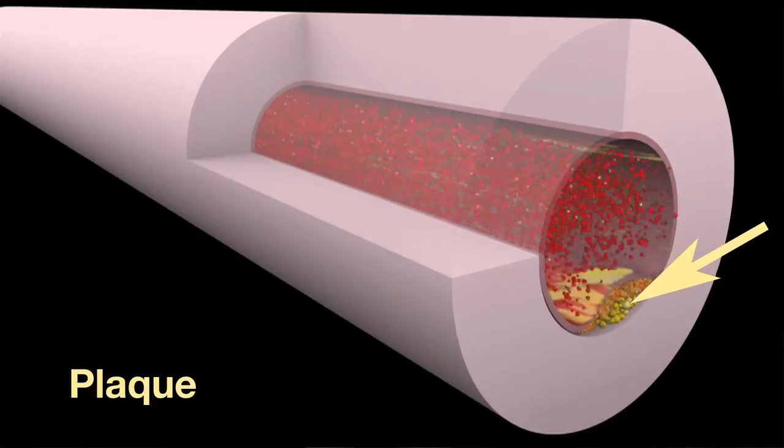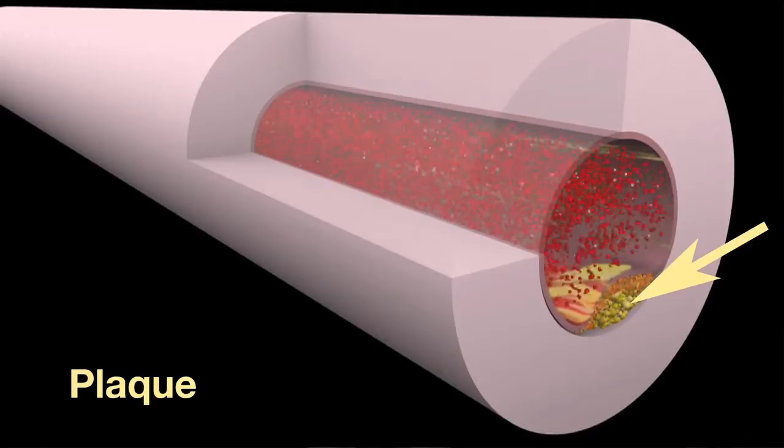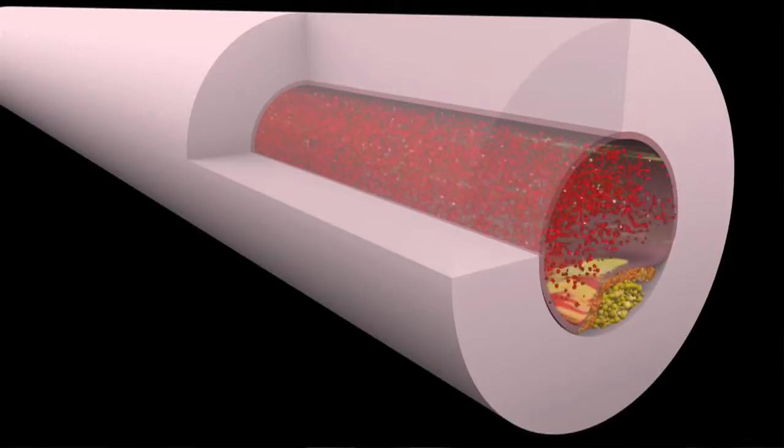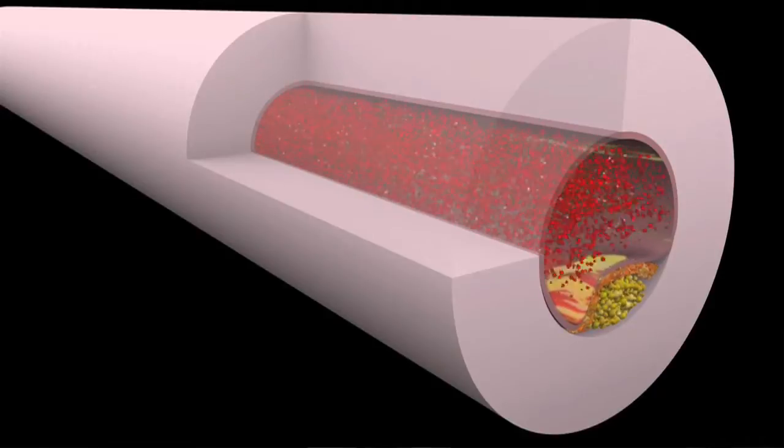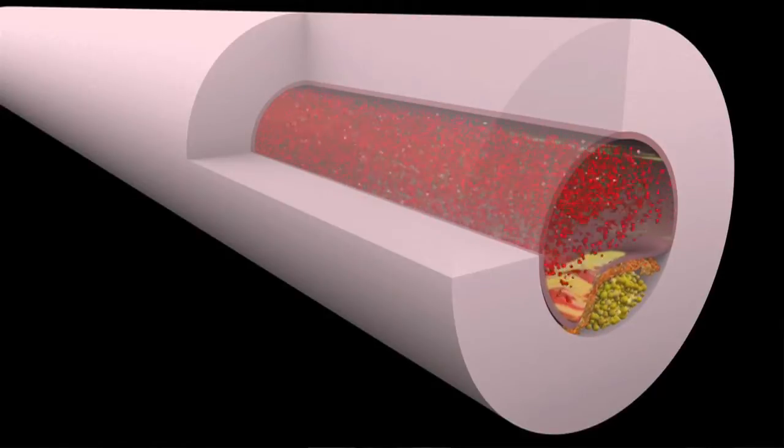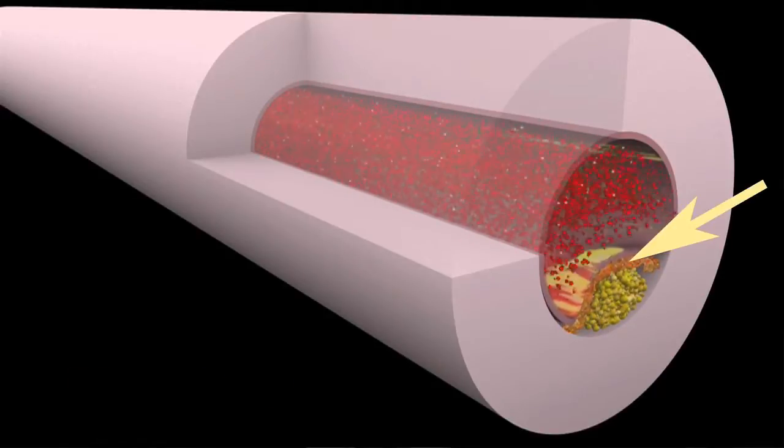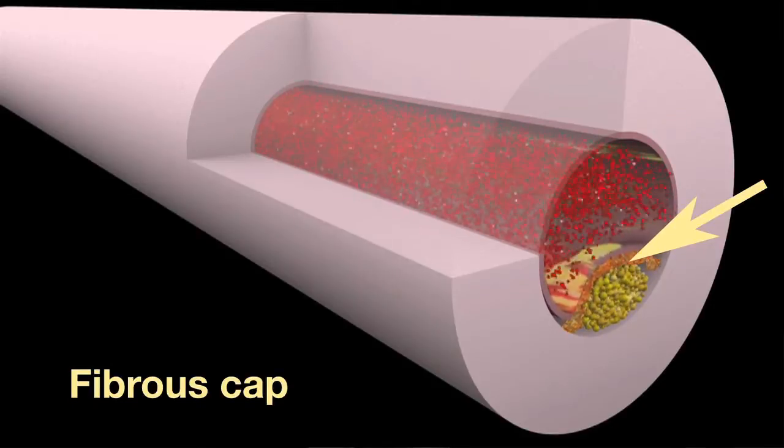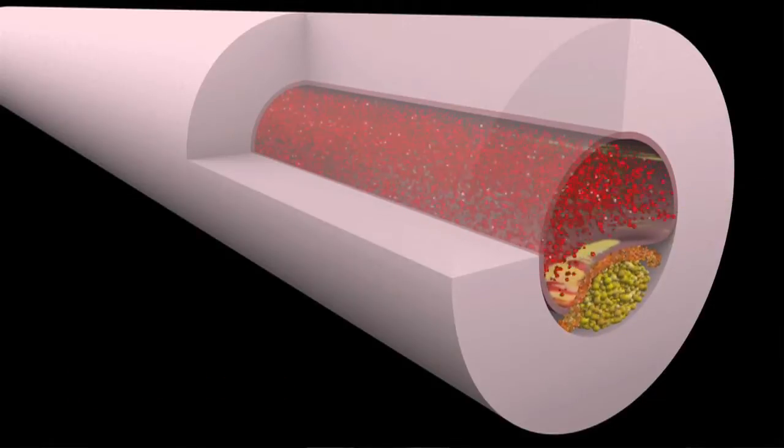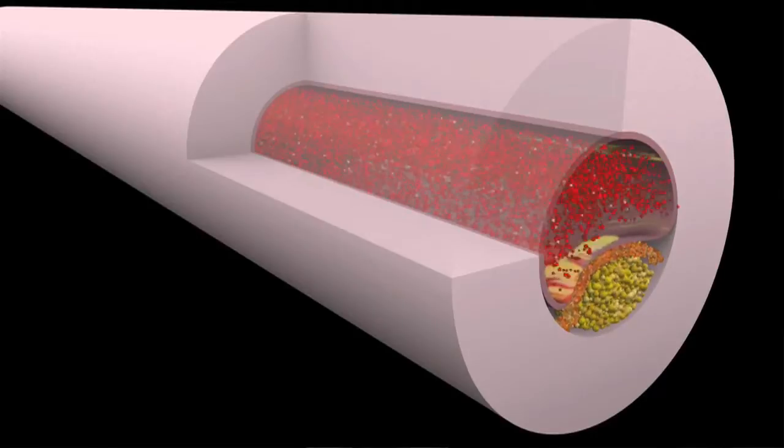The plaque pushes into the wall of the artery. The inside of the plaque contains a pool of cholesterol that keeps growing. Now see this? This is a fibrous cap that grows over the top of the plaque. The cap holds the cholesterol inside the plaque.